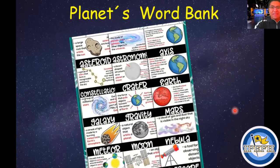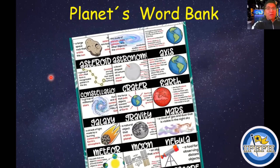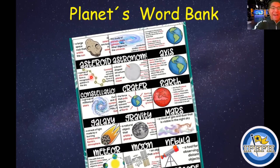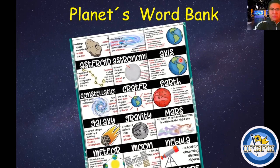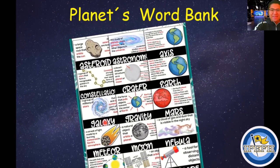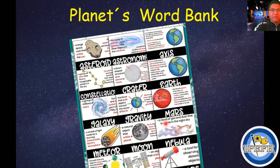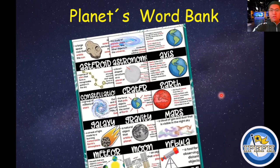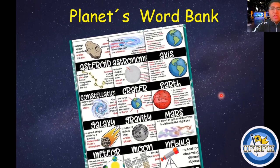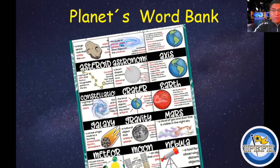Another important piece of information to consider is the Planets Word Bank. Here we have some vocabulary related to the planets, such as: asteroid, astronomy, axis, constellation, crater, earth, galaxy, gravity, the name of a planet like Mars, meteor, moon, nebula, orbit, satellite, and telescope. You are going to choose which elements you are going to include in the presentation of your new planet.